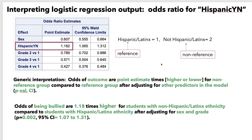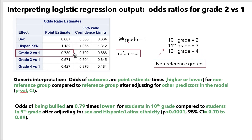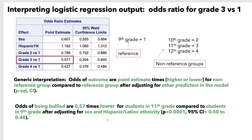Although overall females are less likely to be bullied than males, once we account for ethnicity and grade, that relationship reverses. Moving on to our next significant predictor, Hispanic_YN: the odds of being bullied are 1.18 times higher for students with non-Hispanic/Latinx ethnicity, the non-reference category, compared to students with Hispanic/Latinx ethnicity, the reference category, after adjusting for sex and grade. For grade, we interpret a separate odds ratio for each comparison. Grade 2 versus 1 means 10th versus 9th grade — odds of being bullied are 0.79 times lower for 10th grade compared to 9th grade. For 11th grade, odds are 0.57 times lower compared to 9th grade. For 12th grade, odds are 0.43 times lower compared to 9th grade, after adjusting for the other predictors in the model.